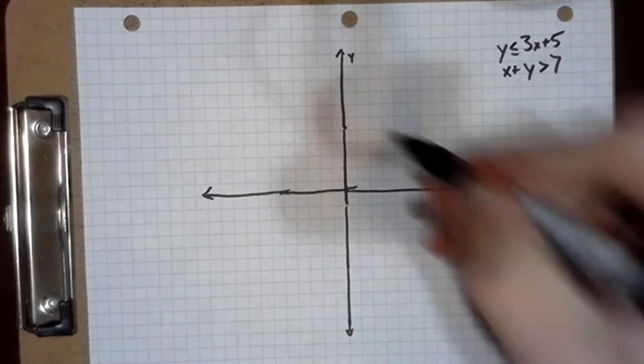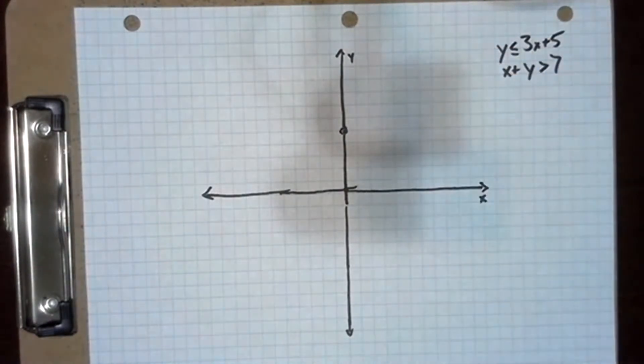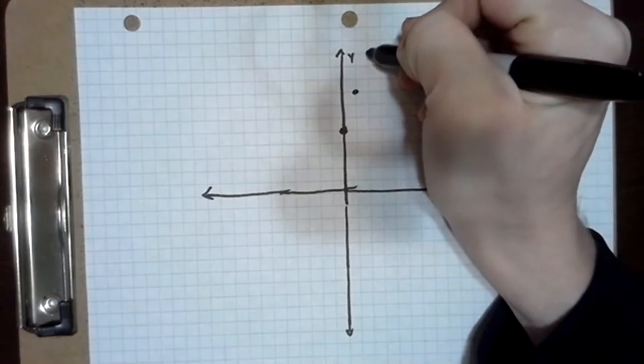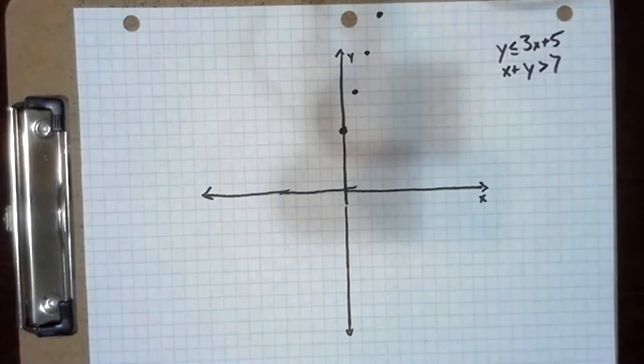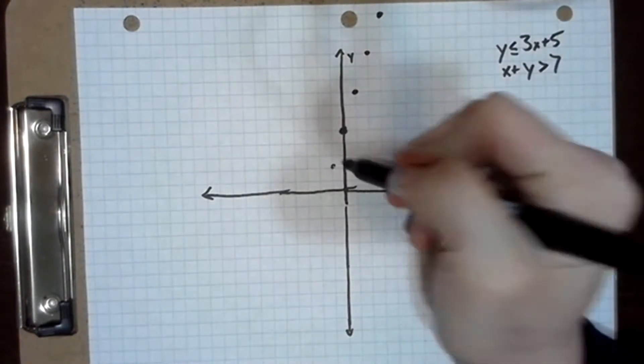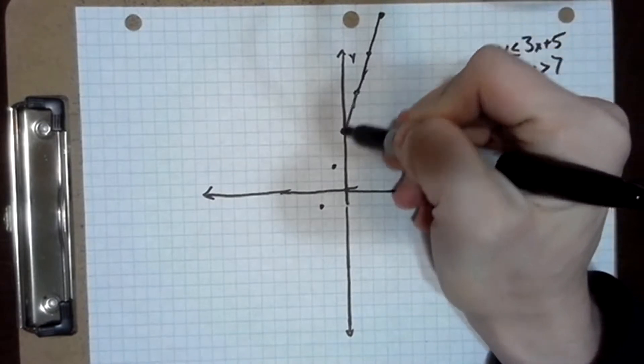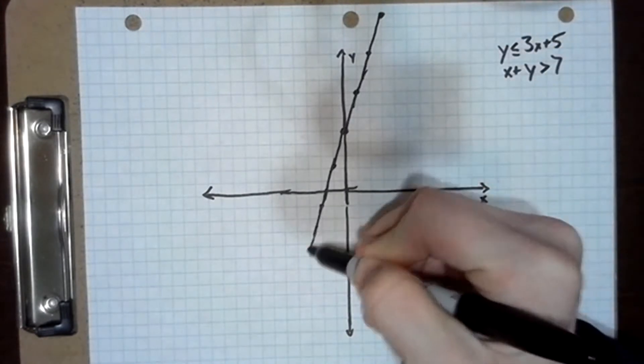It's going to have a y-intercept right there, and then it increases by 3 as it goes up this way and decreases by 3 as it comes down this way, and we get this line here which is pretty neat and easy to find.